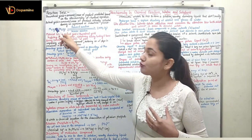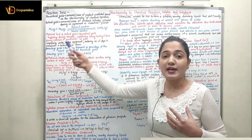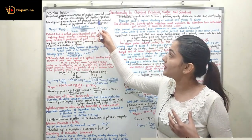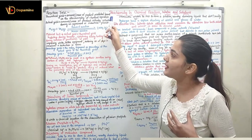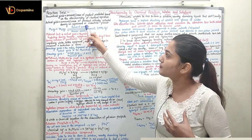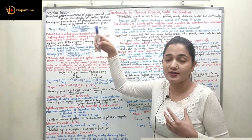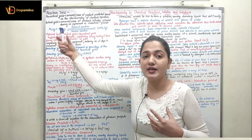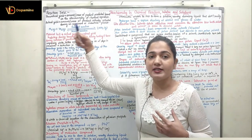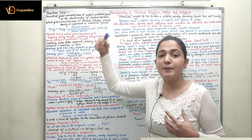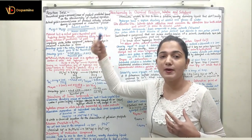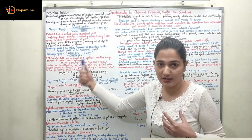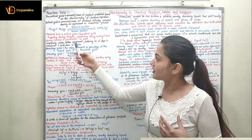Similarly, we have the actual yield. The actual yield, as the name suggests, is the amount or mass of the product actually collected during the experiment or industrial processes. Sometimes the actual yield is lesser than the theoretical yield.